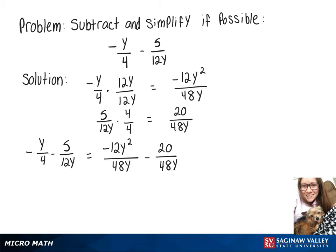And now that they have a common denominator, we can combine that into one fraction, giving us negative 12y squared minus 20 over 48y.